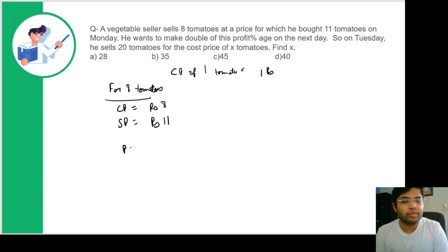So profit percentage can be written as (11 minus 8) upon 8 into 100. This comes out to be 300 by 8 or we can write this as 75 by 2.